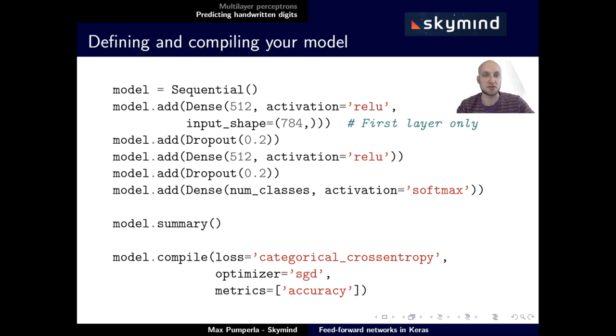Next, we can proceed to defining and running our model. We start by initializing a sequential model, and then adding dense and dropout layers one by one. In the first layer, you see that we also specify an input shape.